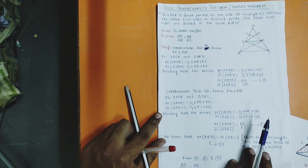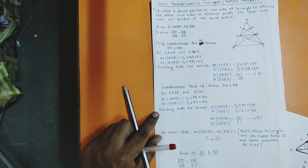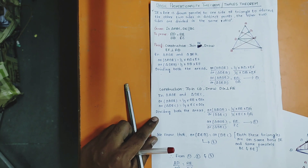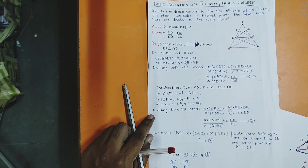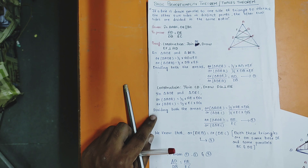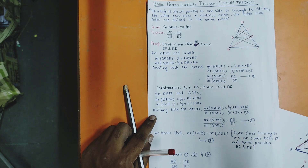Hopefully you understood the theorem. You can take a screenshot, or download the paper from the link provided below. This is a simple method of the basic proportionality theorem. Thank you and kindly subscribe.